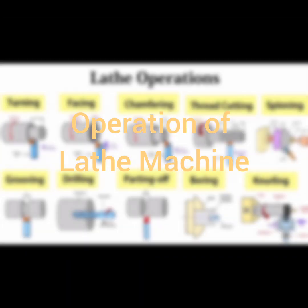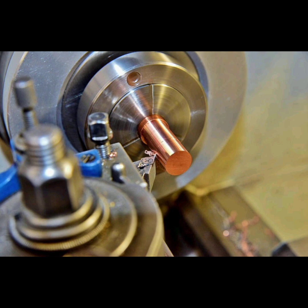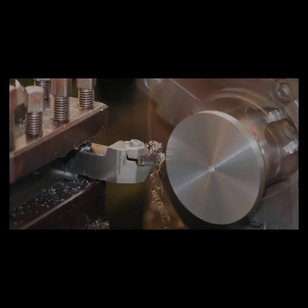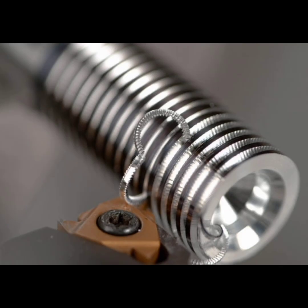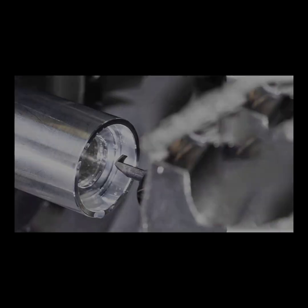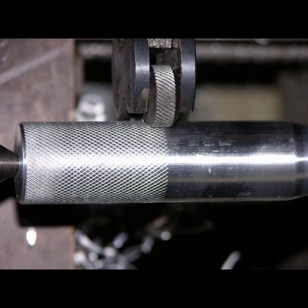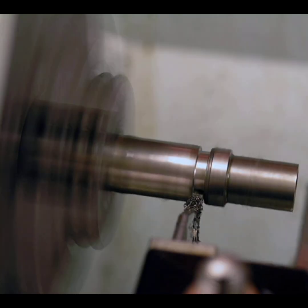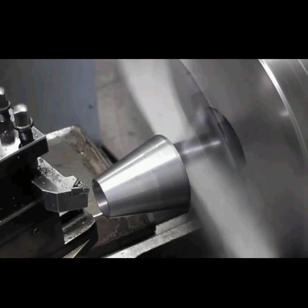Lathe machine operations: Turning reduces the diameter of the workpiece. Facing makes a flat surface on the end of the part. Thread Cutting produces screw threads. Drilling makes holes along the axis of the workpiece. Boring enlarges an existing hole. Knurling creates a patterned grip on the surface. Parting cuts off part of the workpiece. Taper Turning produces a conical shape.